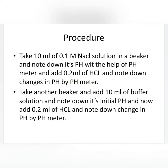First, we will take 10 ml of 0.1 M NaCl solution in a beaker and note down its initial pH with the help of a pH meter. Then we will add 0.2 ml of HCl and note down the change in pH. Then we will take another beaker, add 10 ml of buffer solution, note its initial pH, then add 0.2 ml of HCl and observe the change in pH.